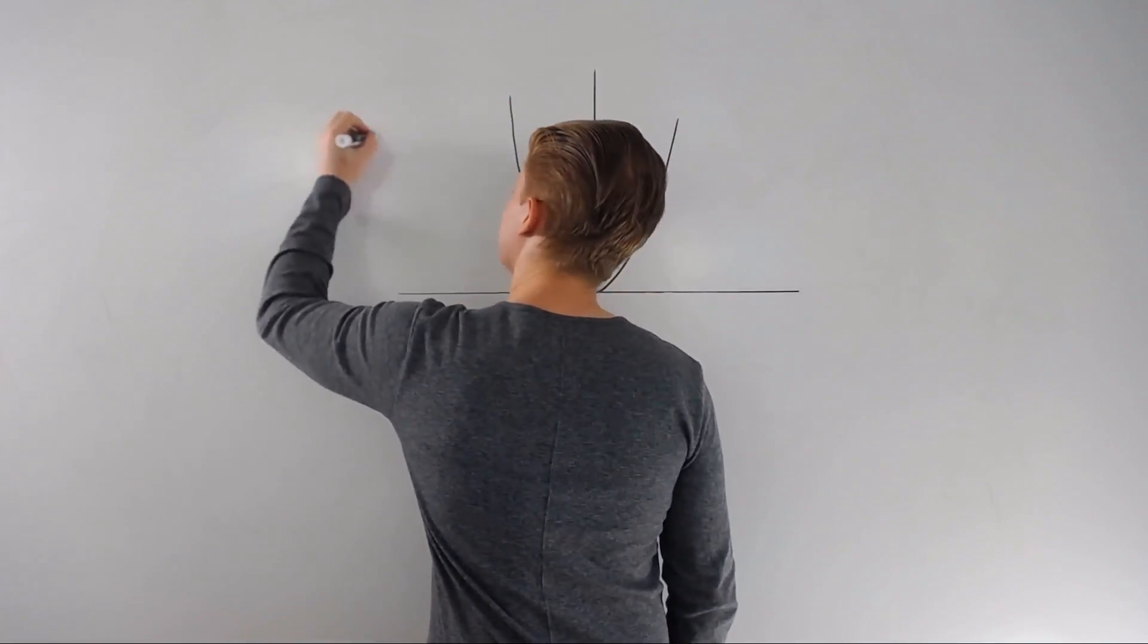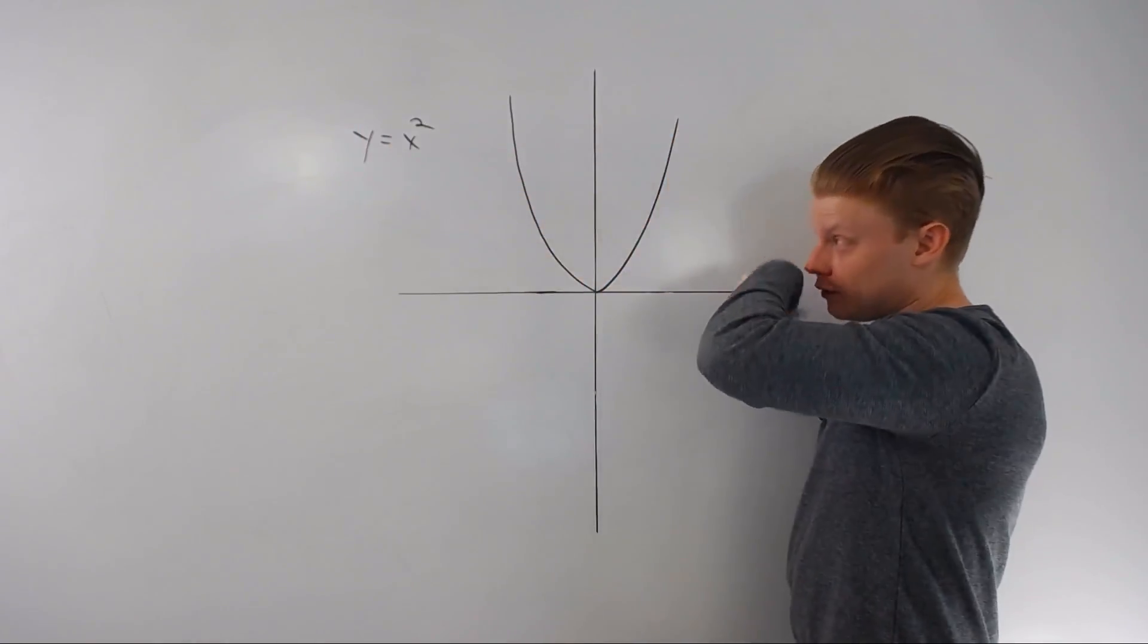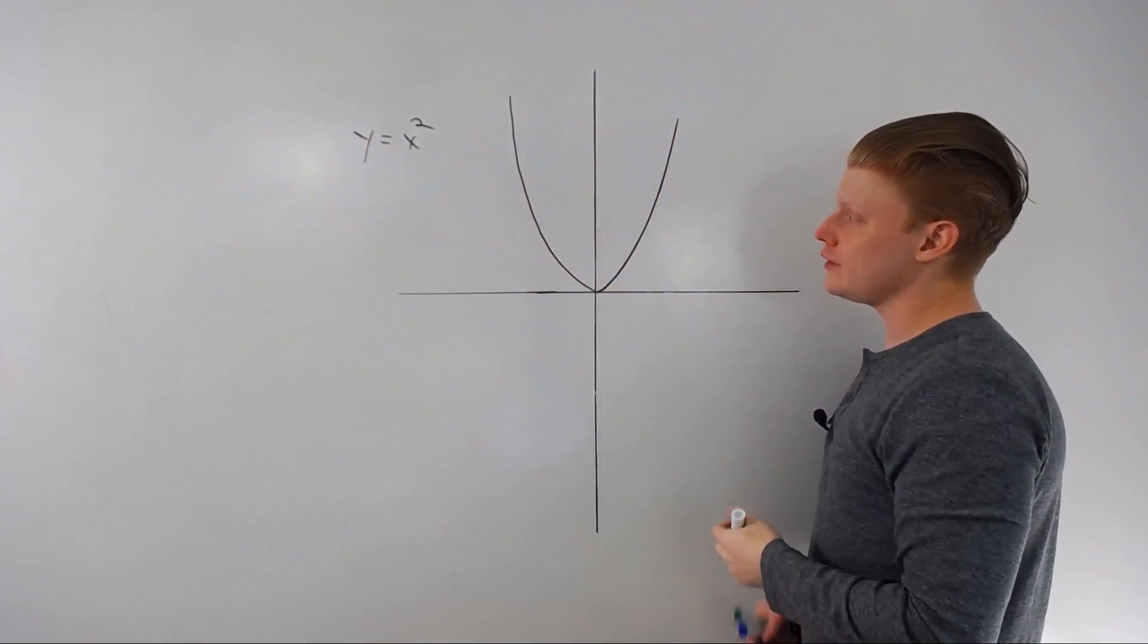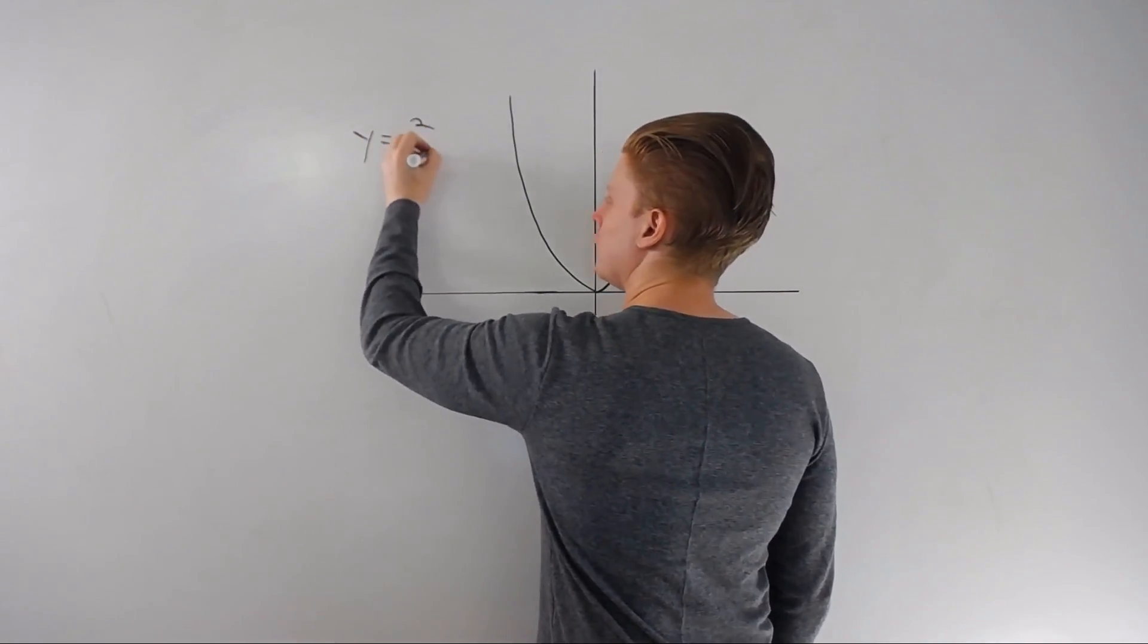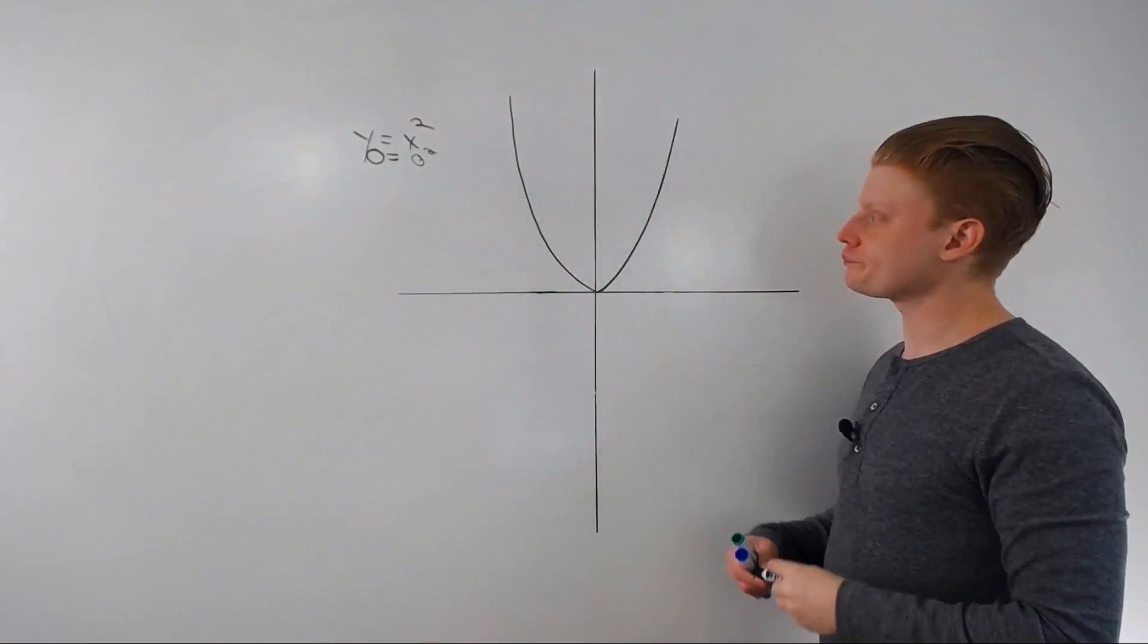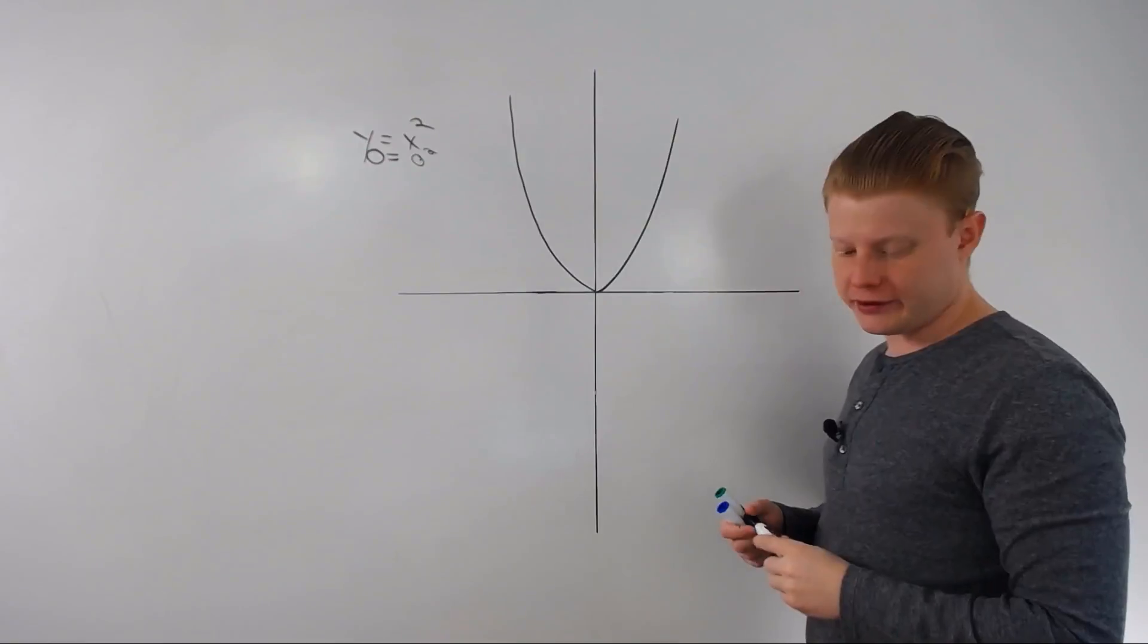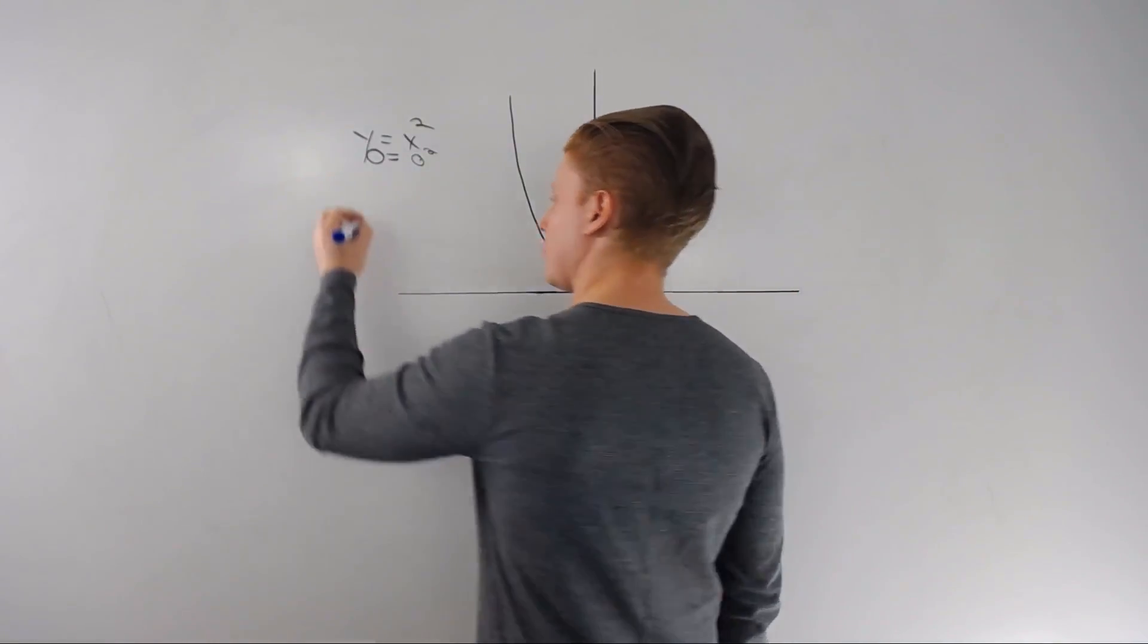So y equals x squared is your standard parabola, sort of graphed up here loosely. If I plug in zero for x, remember x is our input into the function, zero squared will be zero. Zero will spit out zero. But if I start to change things around a little bit, let's say instead of y equals x squared I have...